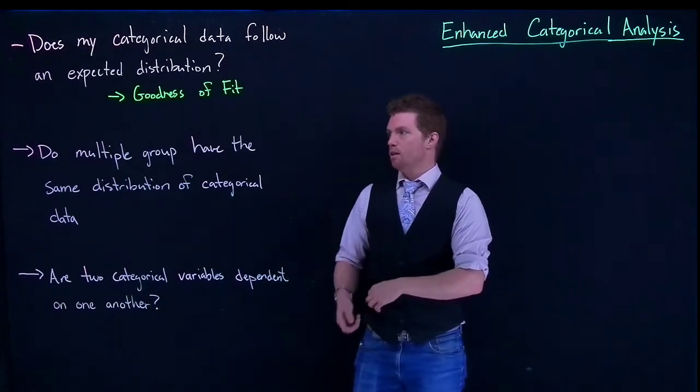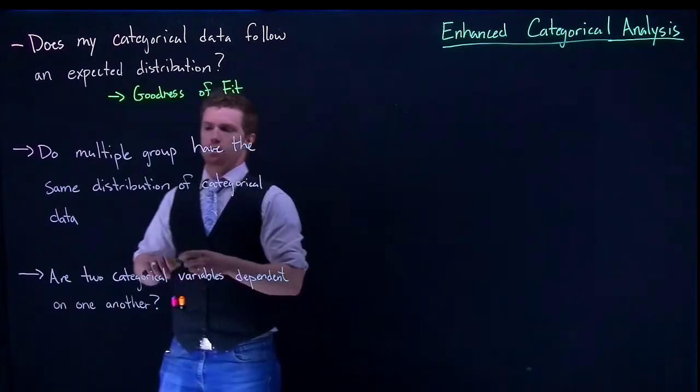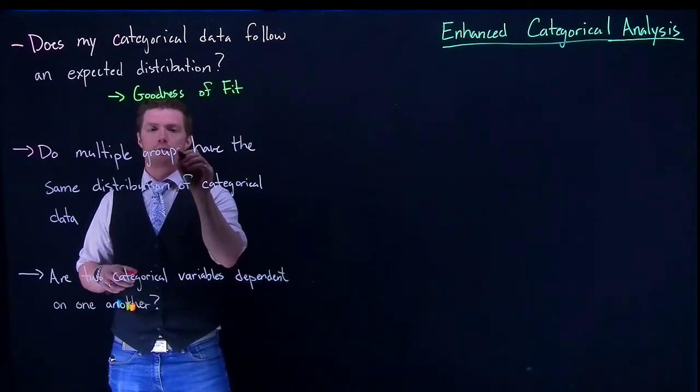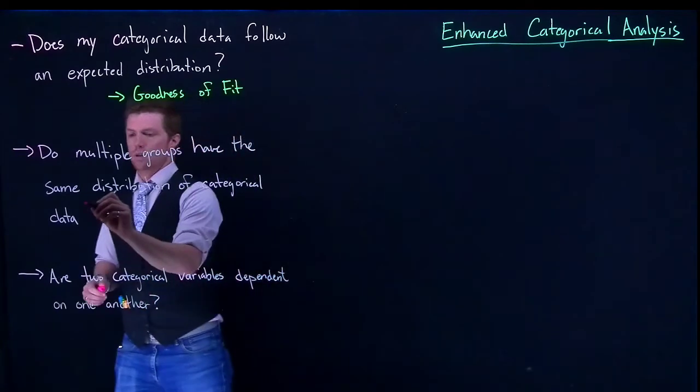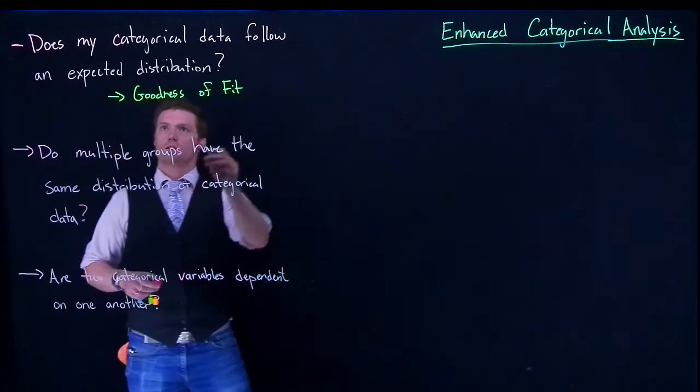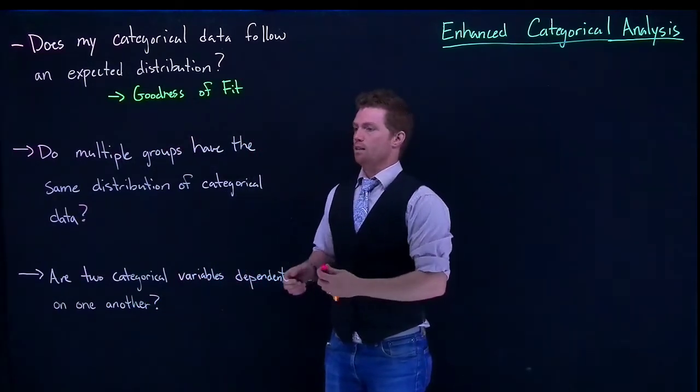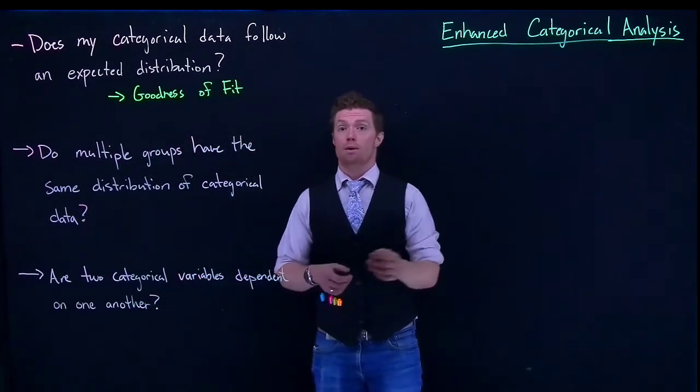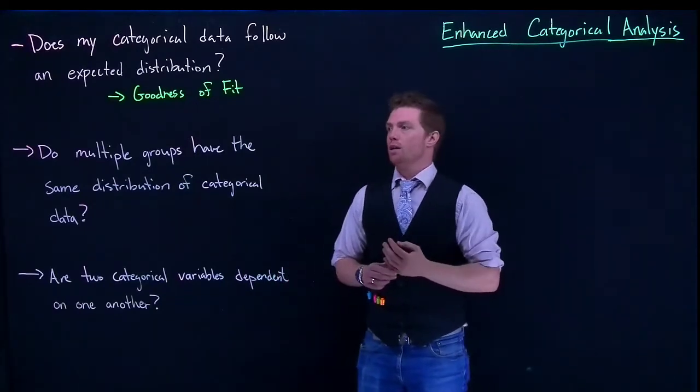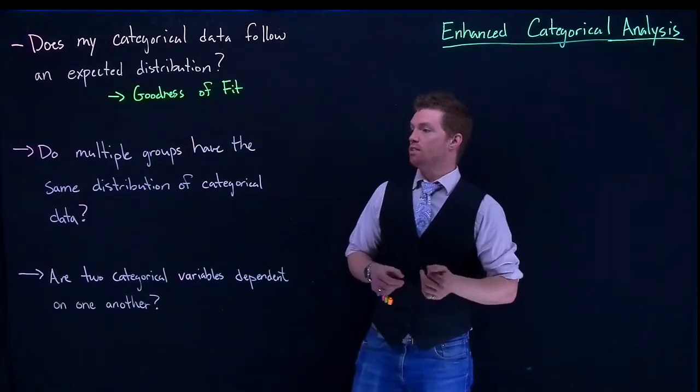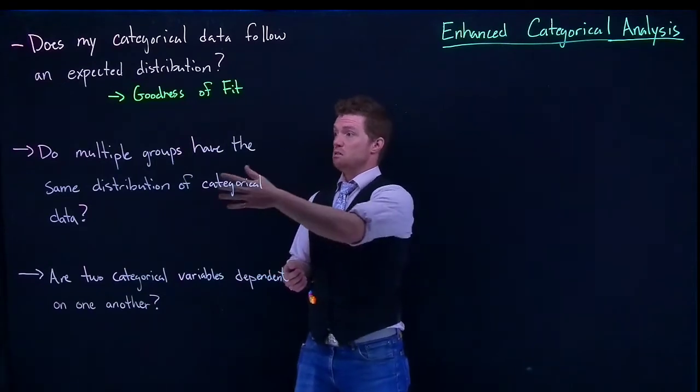The next one is, do multiple groups have the same distribution of categorical data? Instead of asking if I follow a specific distribution, if I look at multiple towns—maybe Chicago, Los Angeles, and New York—I want to say, do they have the same distribution of ethnicities? We could do that.